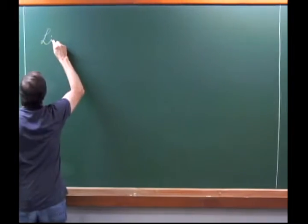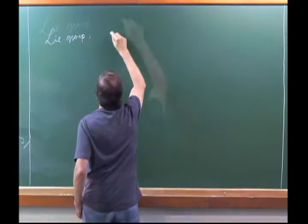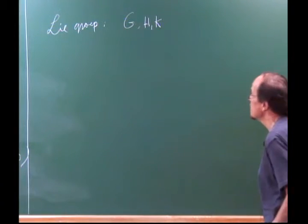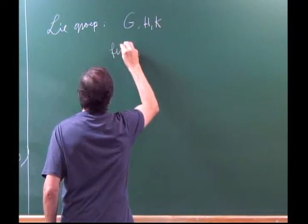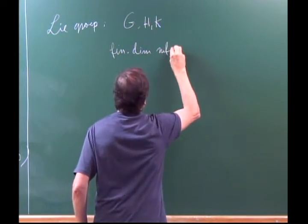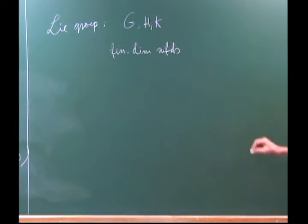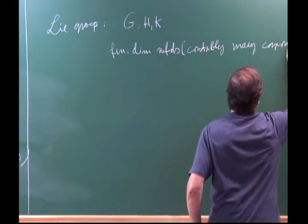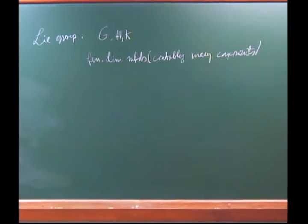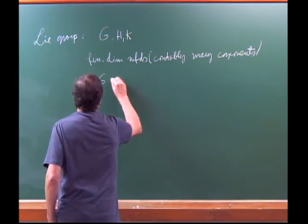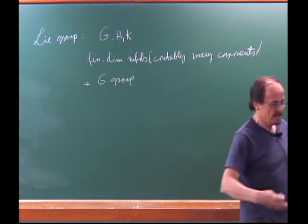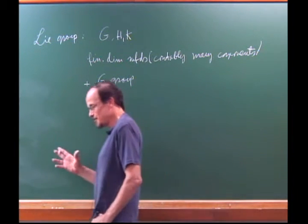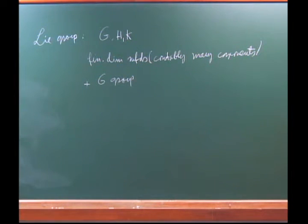So first, what's a Lie group? Denoted by G — my letters for Lie groups are always G, H, and K. They are finite-dimensional manifolds, and with manifold we implicitly assume only countably many components, as is usual. Then I add to that the condition that G is also a group. So I combine these two concepts — manifold and group — which in principle have nothing to do with each other. This is probably one of the most amazing combinations of concepts in mathematics; the combination is amazingly deep.